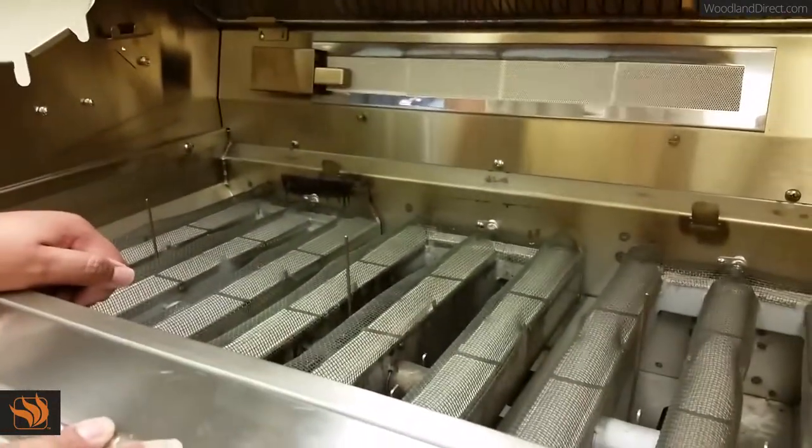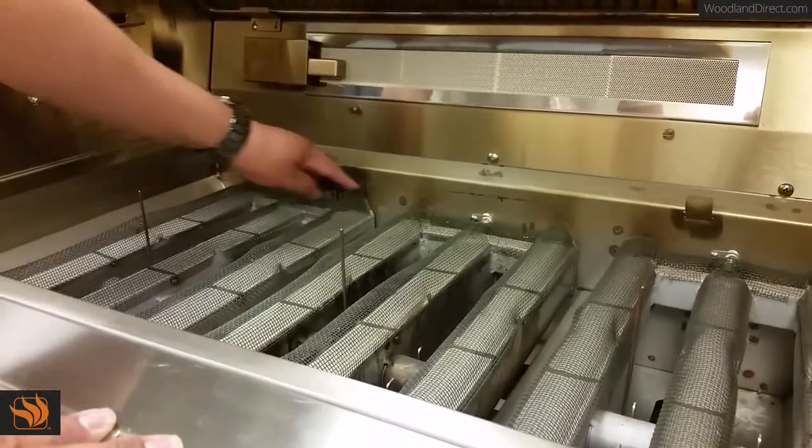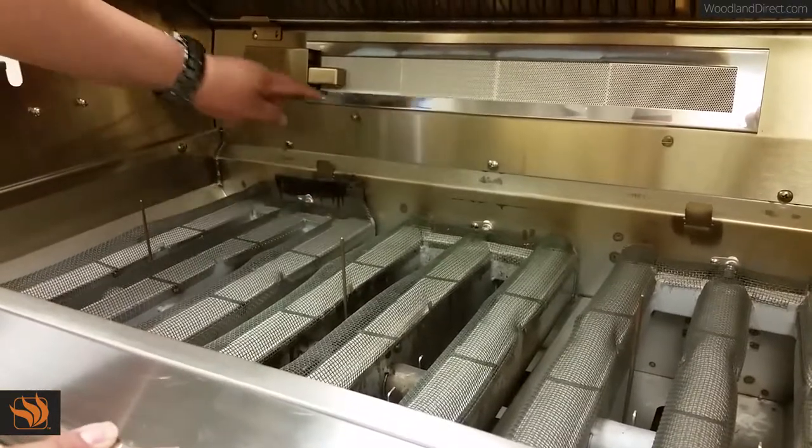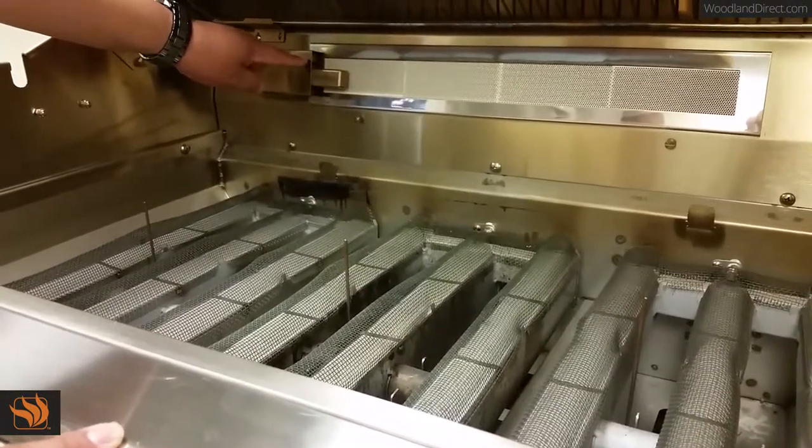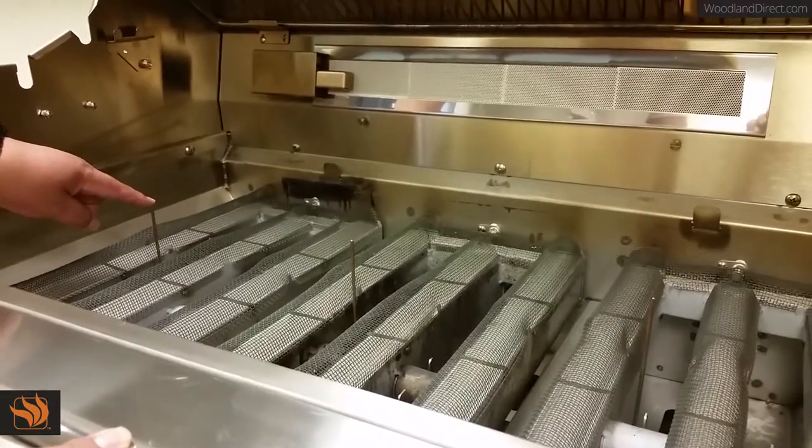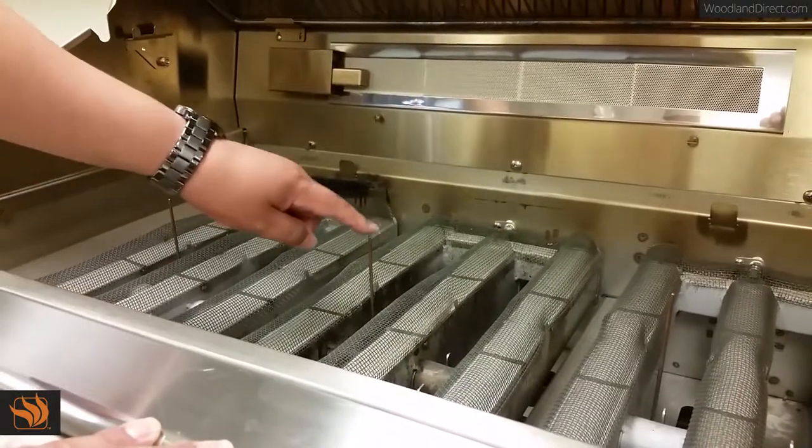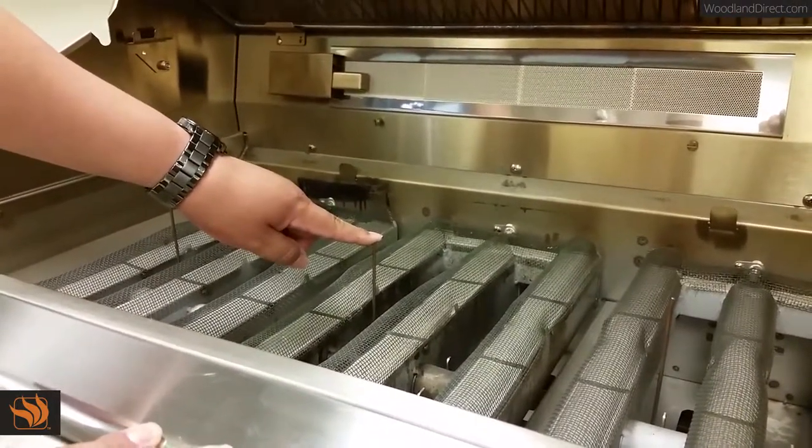On a 30 inch grill, you would simply have igniter one, two, and this would always be four. Same goes with the cook temperature. It'll be on the 30 inch grill: one, two, there is no three.